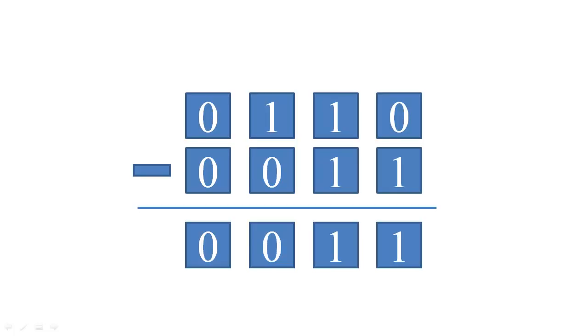So if I want to subtract 3 from 6, I really want to add negative 3 to 6. So how do I convert a positive number into a negative number?